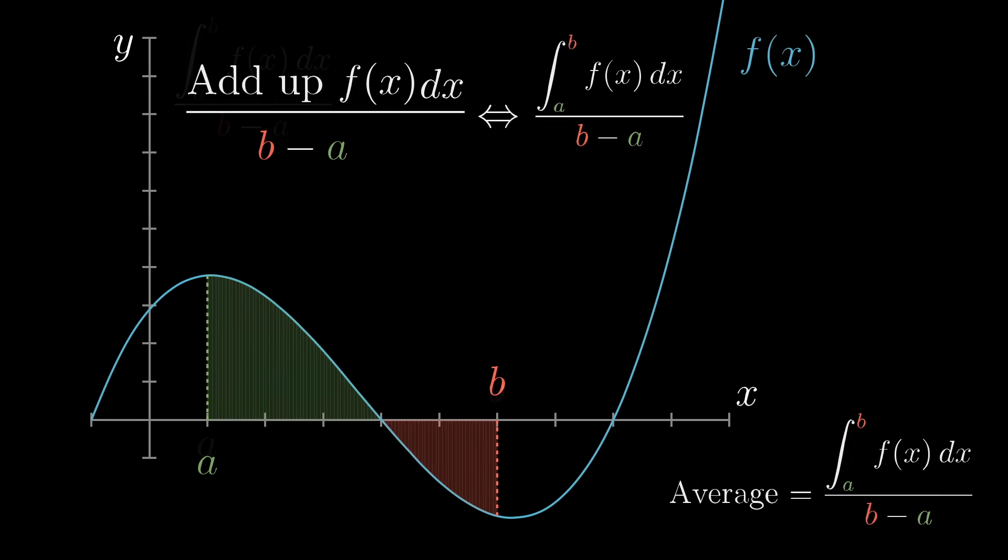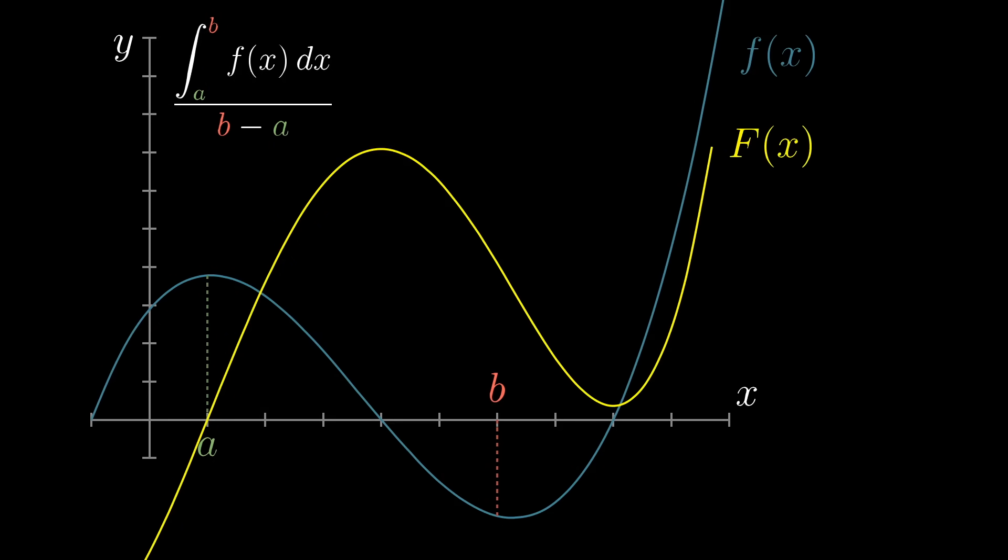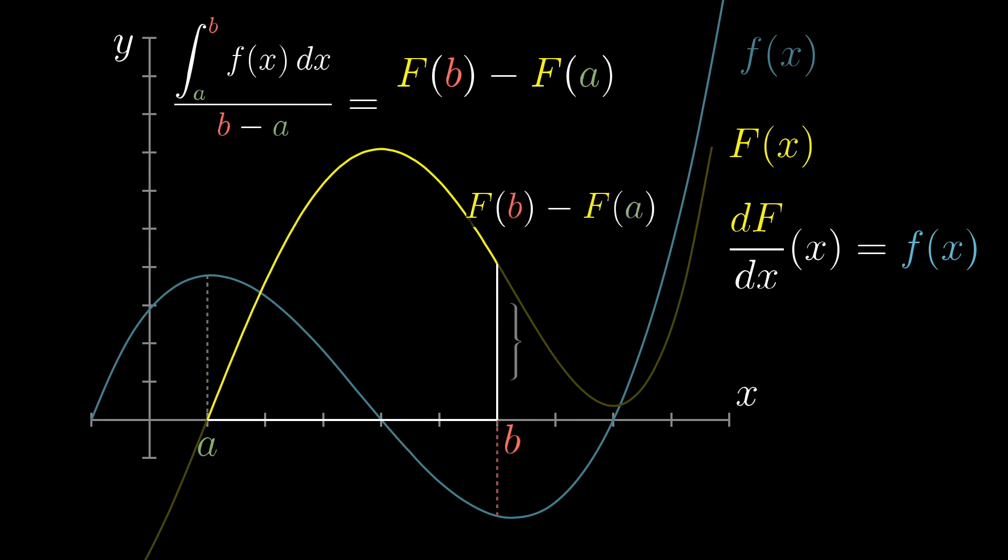Now, for any integral, evaluating it comes down to finding an antiderivative of f, commonly denoted capital F. What we want is the change to this antiderivative between a and b, which you can think of as the change in height of this new graph between the two bounds.